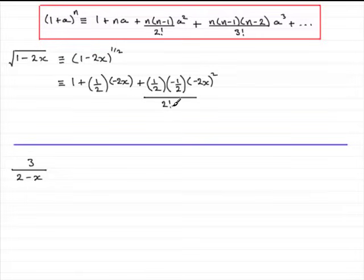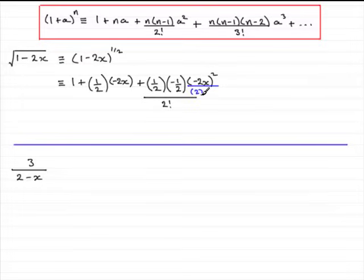At this point, rather than writing 2 factorial above the line, I prefer to find a space on the bottom line and write 2 times 1 there instead. It gives exactly the same answer but I find it really does simplify the calculation. I'll use the same approach for the next term as well.